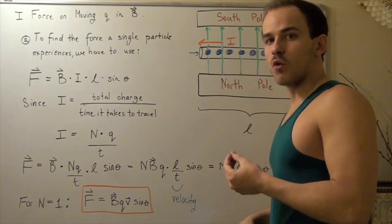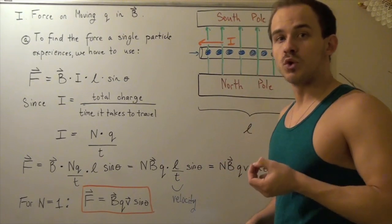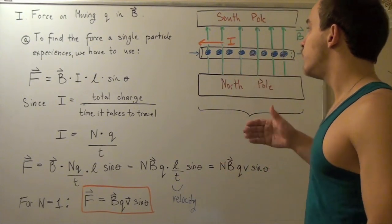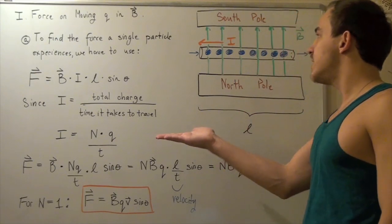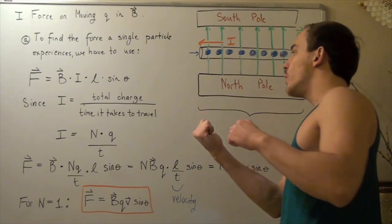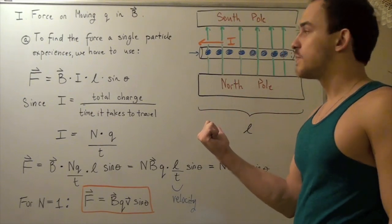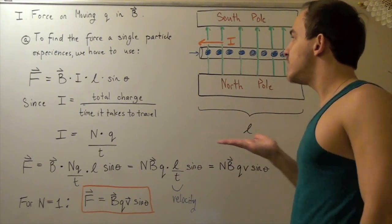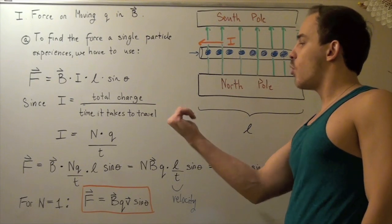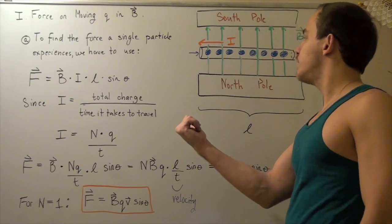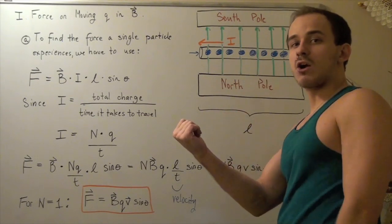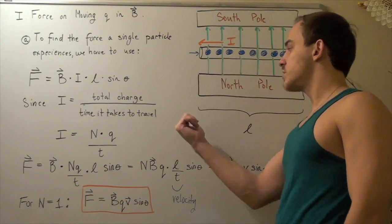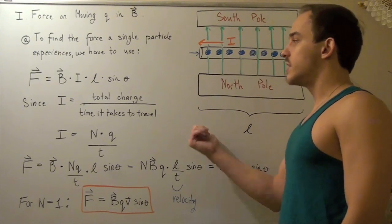The direction of this force is given by the right-hand rule. In this case, if we use our right-hand rule, we see that our direction of the force is going into our page or into our board because this points into our current and this points in the direction of our field. So this points in our force direction. The force is into our board or into the page.